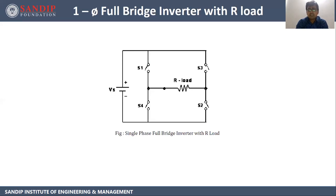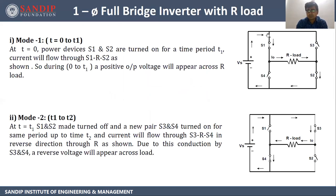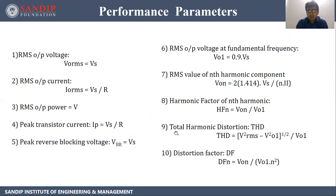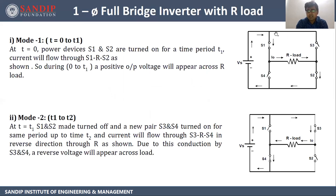Let's start with the single phase full bridge inverter with R load. This is the circuit diagram — it consists of four switches S1, S2, S3, and S4, which are basically power MOSFETs or IGBTs. It is for resistive load. The output is taken across the load and we have connected a DC source. It operates in two modes: Mode 1 and Mode 2. In Mode 1, from 0 to T1, switches S1 and S2 are closed while S3 and S4 remain open. Current flows from Vs positive → S1 → R → S2 → Vs negative, and we get the output.